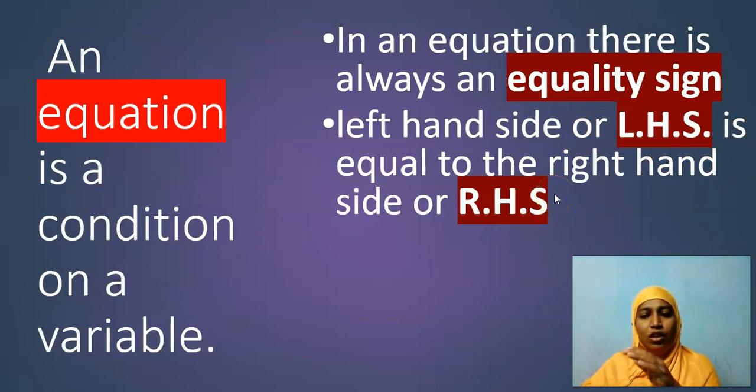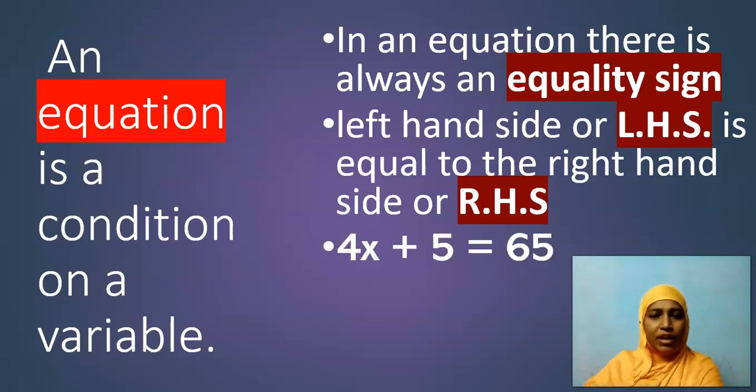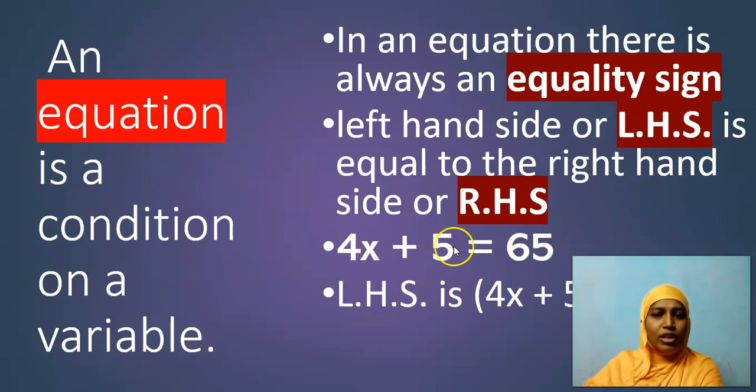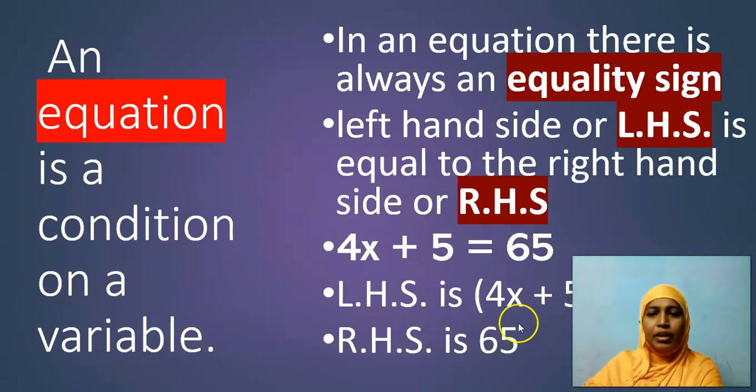Whichever lies right side of the equality sign is right hand side. Whichever lies to the left side of the equality sign is left hand side. Here is an example. In this equation, left hand side is 4x plus 5. And here, only one number. But it is not always necessary to have only number in the right hand side.